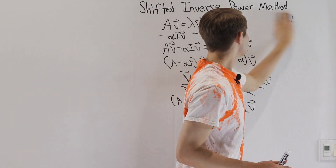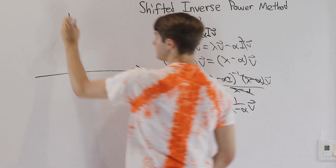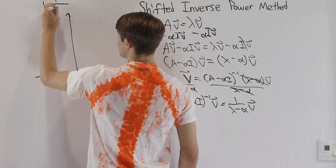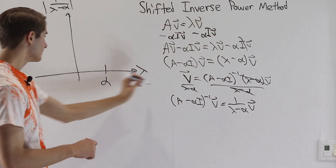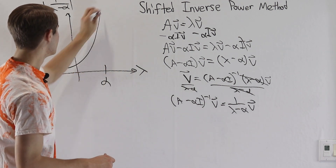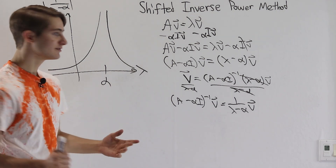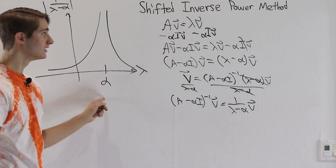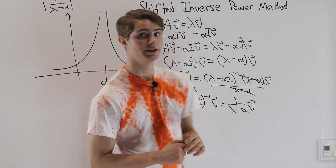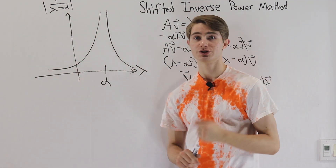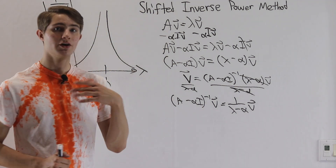We can think about this graphically. If we plot lambda on the x-axis and the magnitude of 1 over (lambda minus alpha) on the y-axis for some value alpha, as lambda gets closer and closer to alpha, the function increases toward infinity. Whichever eigenvalue lambda is closest to alpha will be the new dominant eigenvalue. This means we can take any number alpha and find the eigenvalue closest to it using this shifted inverse method.